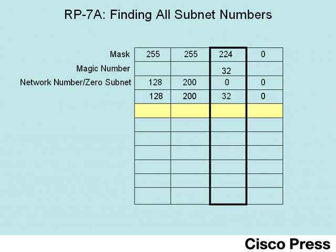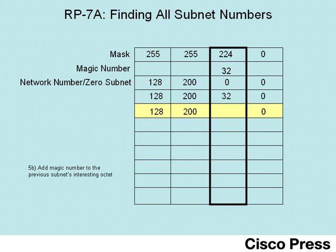To find the next subnet number, you simply repeat step five. At step five A, you copy the three boring octets down to the next subnet number's line. At step five B, you add the magic number of 32 to the previous subnet number's value in the interesting octet, which is 32 in this case, for a value of 64. So the next subnet number is 128.200.64.0.